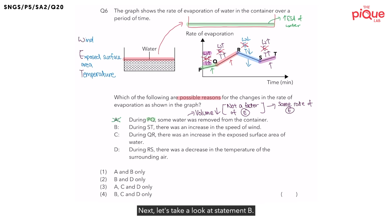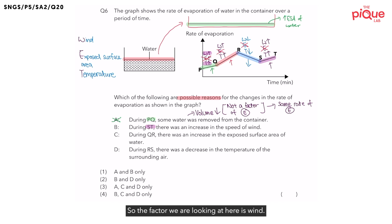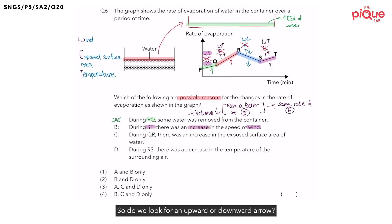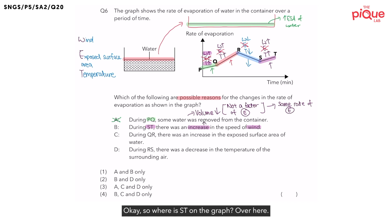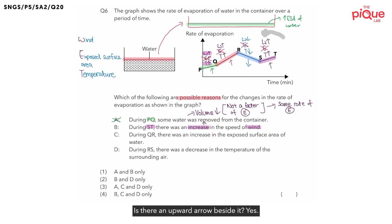Next, statement B: during ST, there was an increase in the speed of wind. The factor here is wind, and the statement says wind speed increased — so we look for an upward arrow. Where is ST on the graph? Looking at wind (W) for that segment — is there an upward arrow? Yes. So statement B is correct.